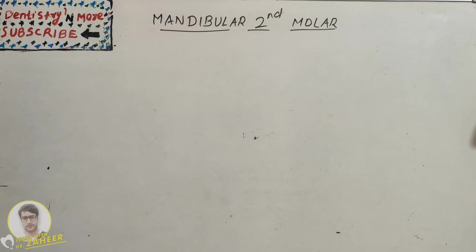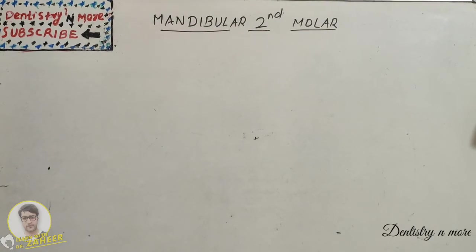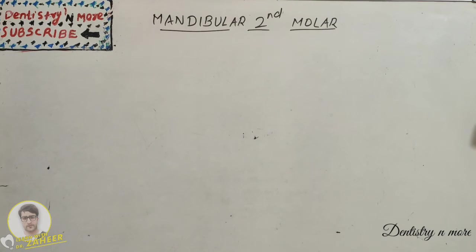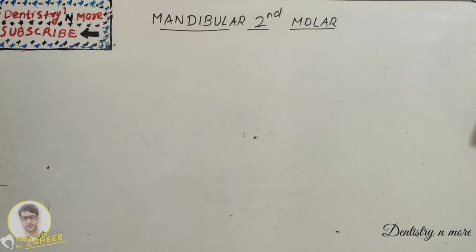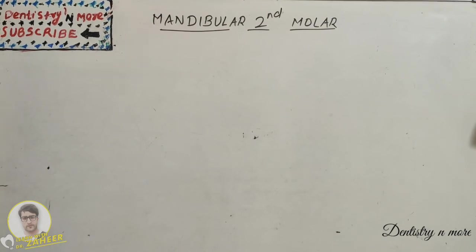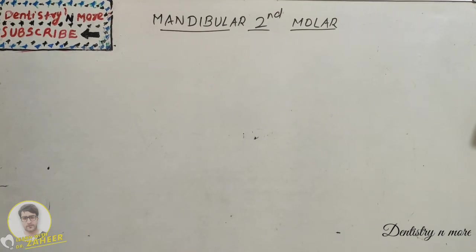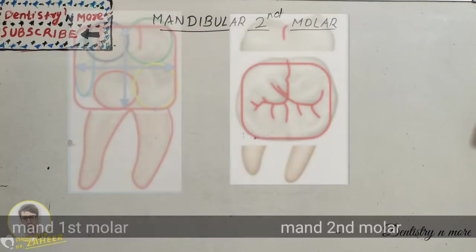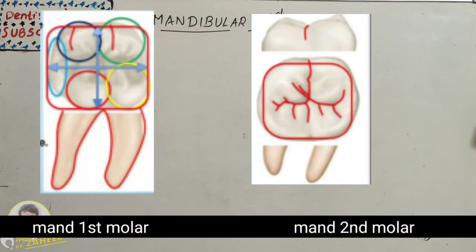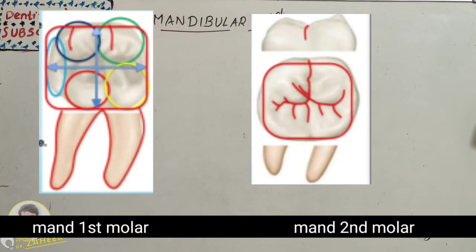Hello everyone, welcome back to another session in Dentistry and More. We are continuing our dental anatomy sessions. Today we have mandibular second molar. Last session we finished mandibular first molar, which is a tooth with many features in each aspect, whether it be buccal, lingual, mesial, distal, and occlusal aspect, which has so many features, many fossas, pits, and many grooves.